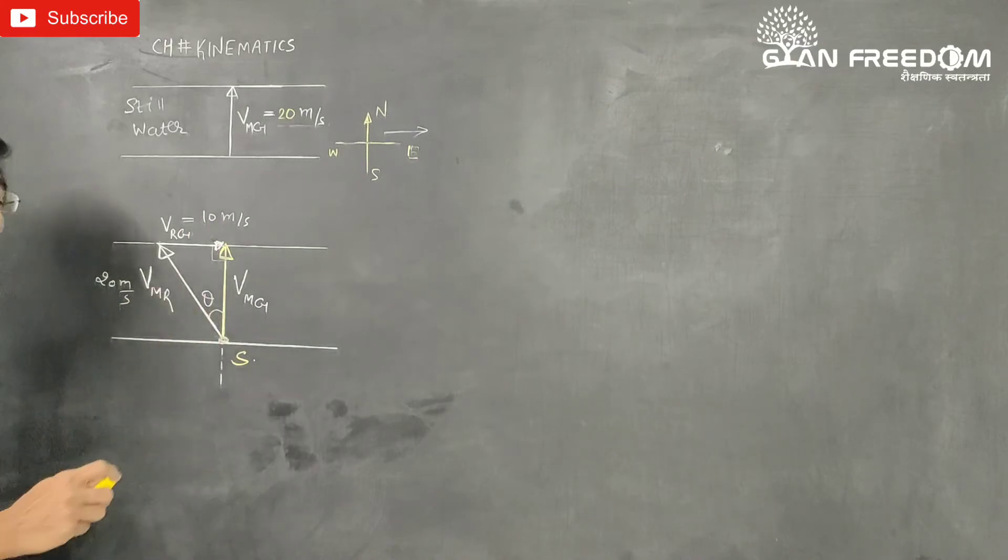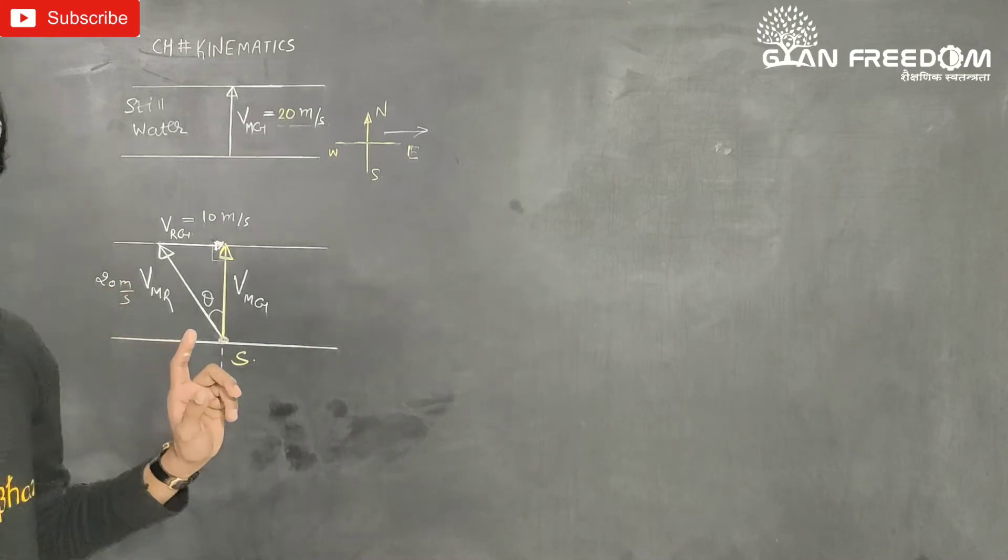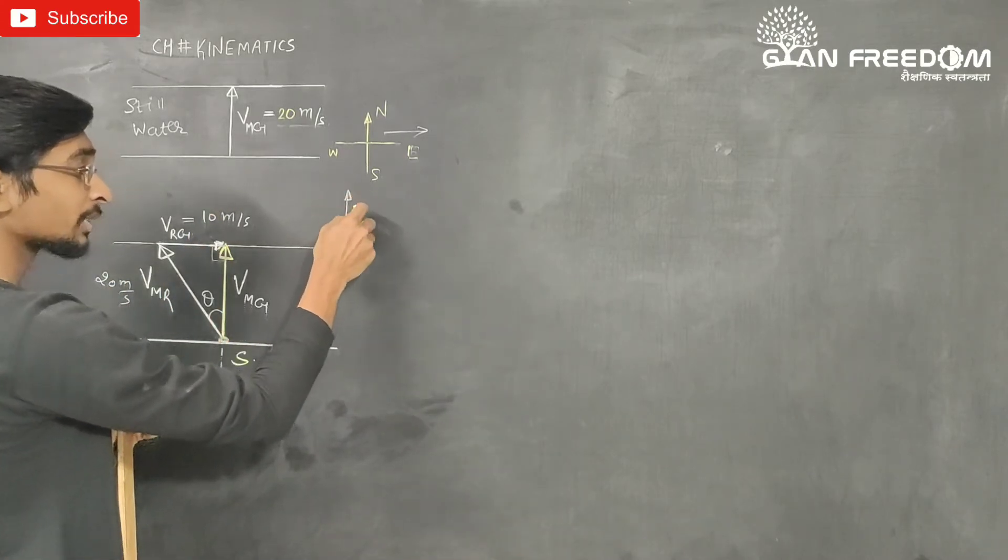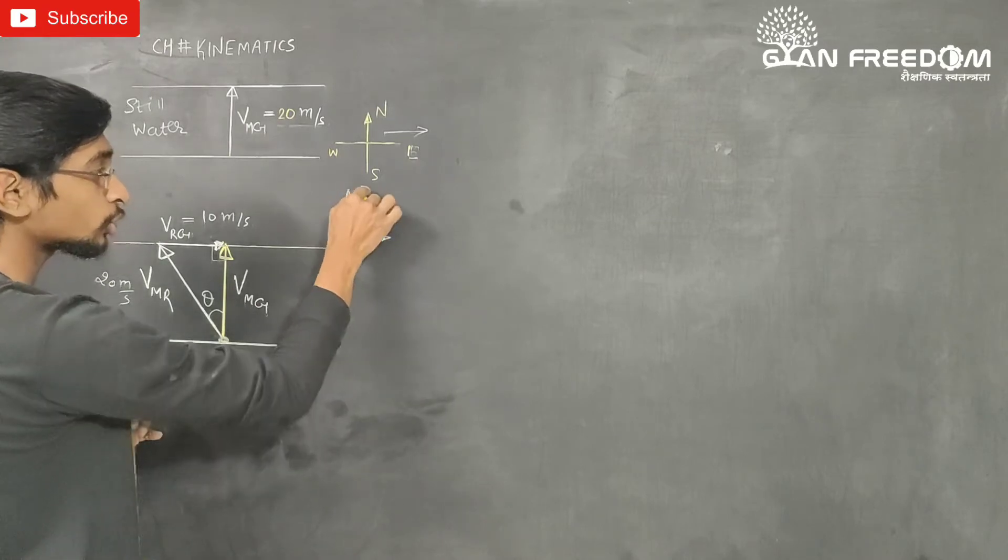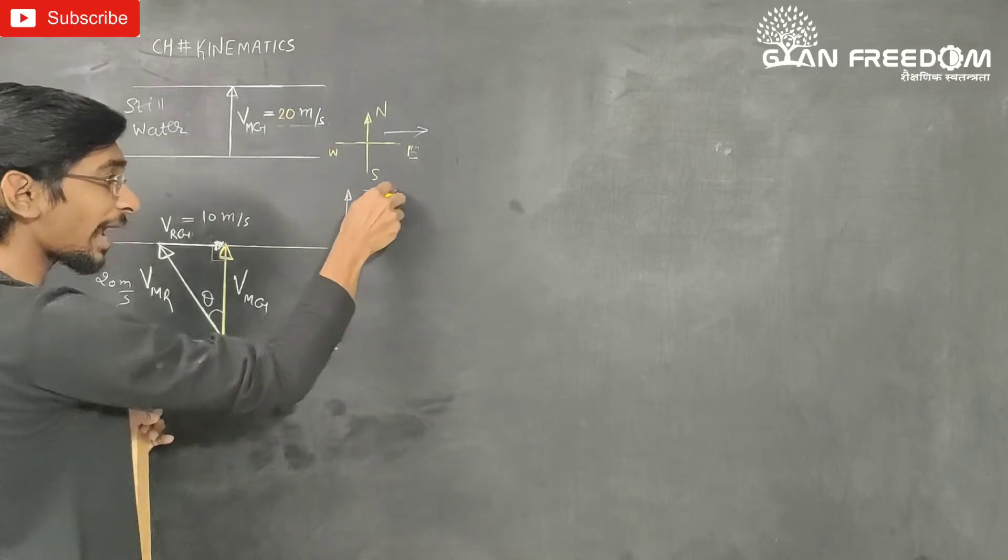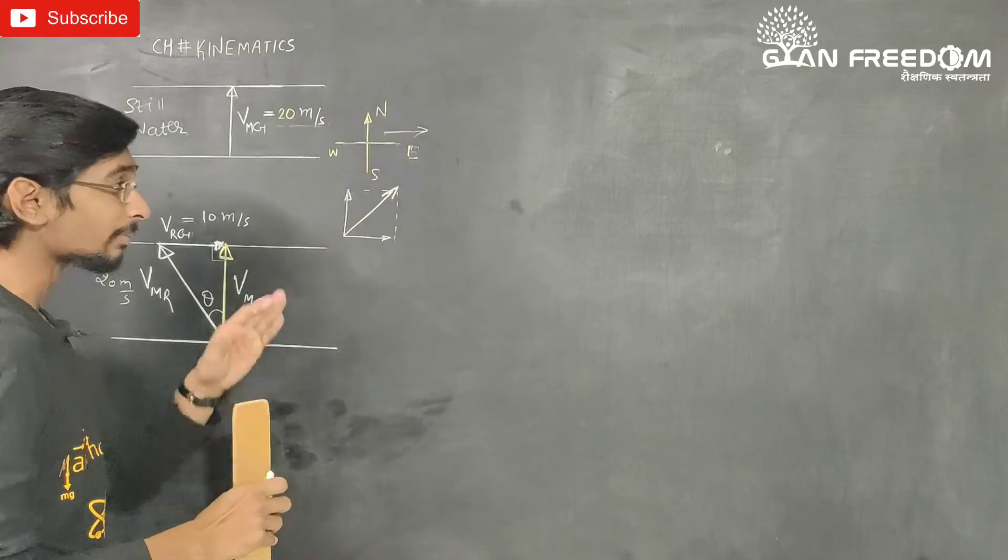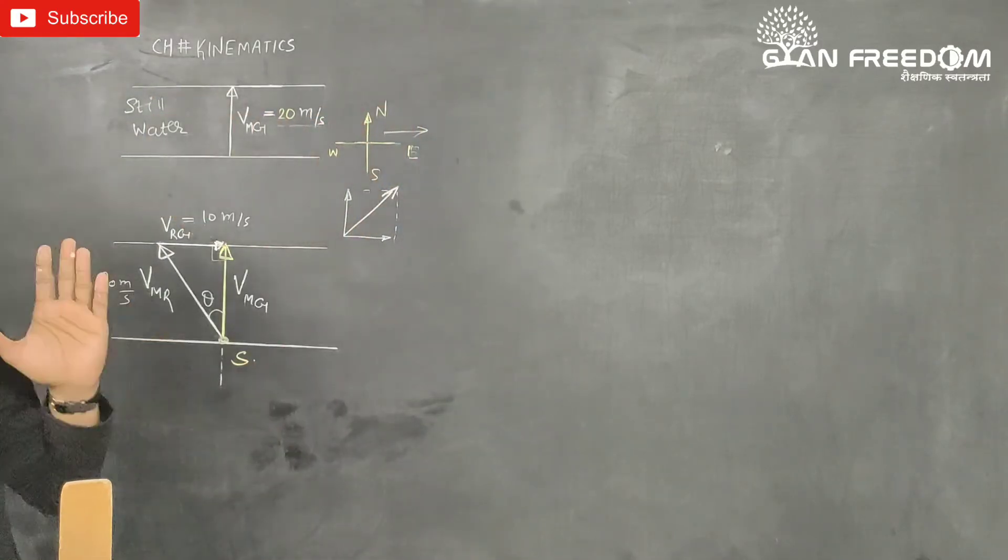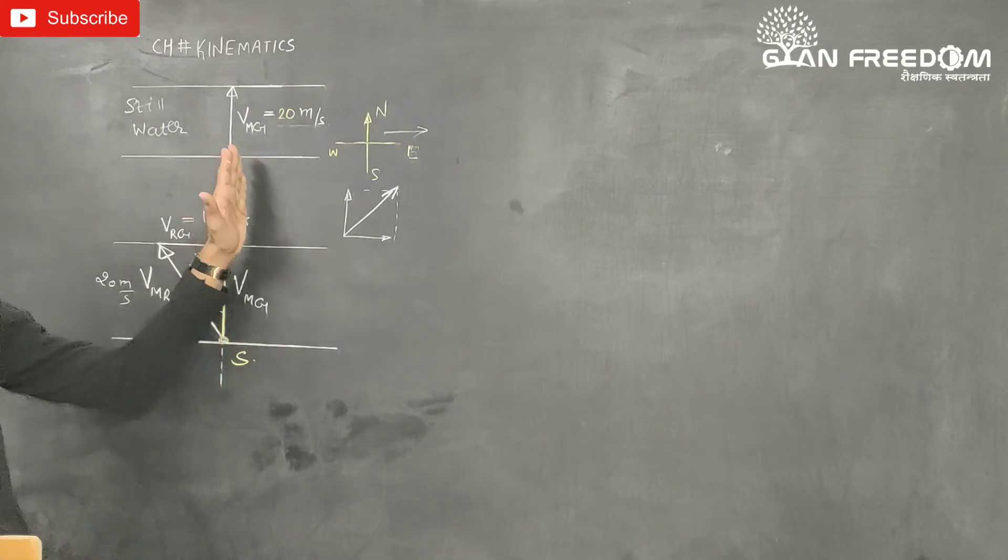Speed was already 20 meter per second. Now if we keep our speed straight, and river is here, then it will not go straight, but it will go resultant using parallelogram law.